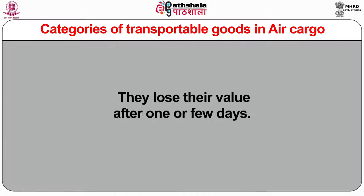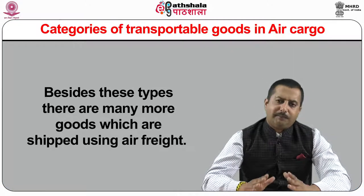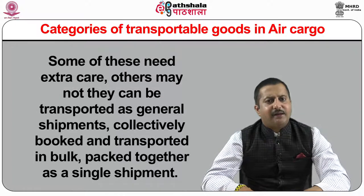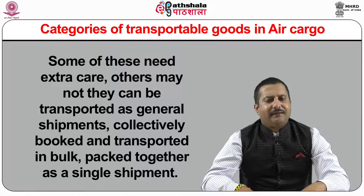Perishables like vegetables, flowers, or fresh fish need fast, timely, and safe delivery, and the same applies to products with a short economic life span such as newspapers, which lose their value after one or few days. Pharmaceuticals that need to be cooled during transportation use dry ice placed in an insulated container. Spare parts are very expensive when factories have line stops. Many more goods shipped by air freight can be transported as general shipments, collectively booked and transported in bulk, packed together as a single shipment, giving economical rates to the forwarder.